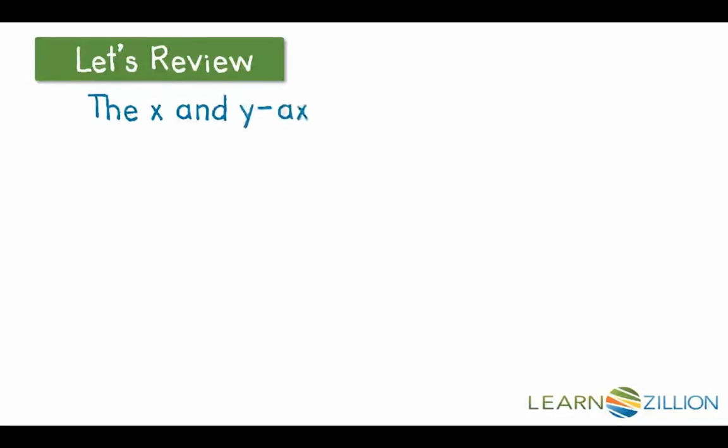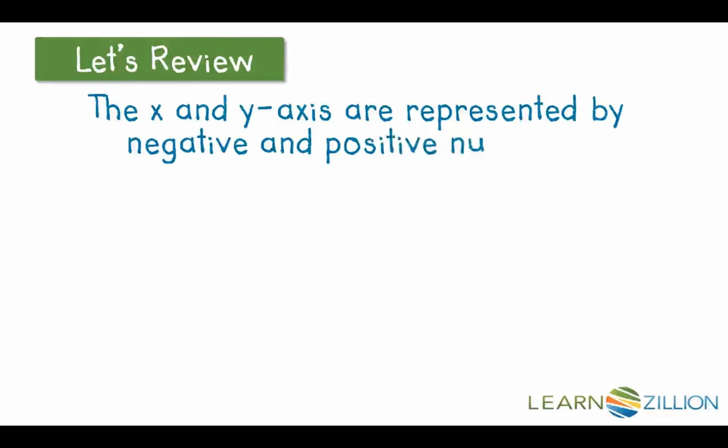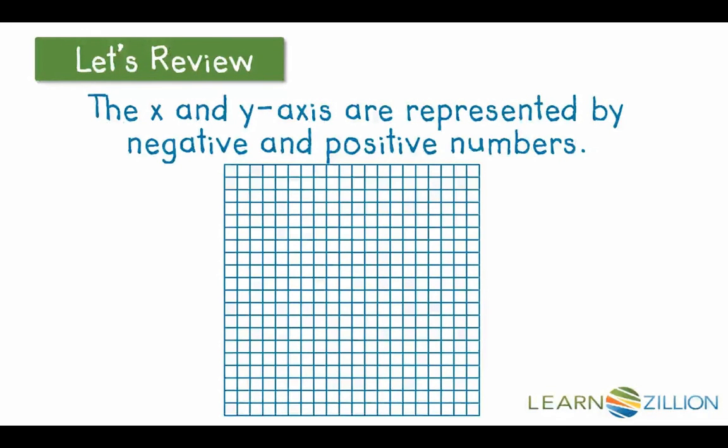Let's review. The x and y-axis are represented by negative and positive numbers. So if we have our coordinate plane, we have our x-axis which runs horizontally, our y-axis which runs vertically, and then each of those are represented by negative and positive numbers.